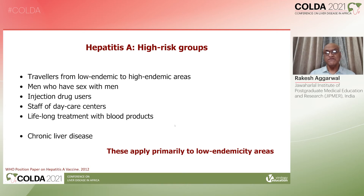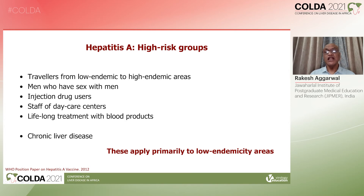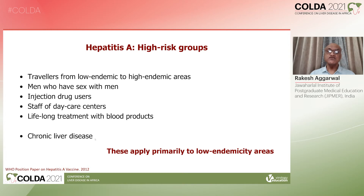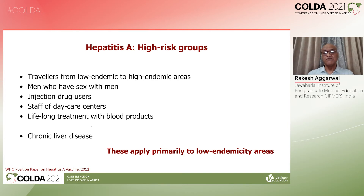Who should get this vaccine? High-risk groups include people who live in low-endemicity countries such as the USA, UK, or other parts of Europe when they travel to high-endemicity areas; men who have sex with men; people who inject drugs; or those on lifelong treatment with blood products such as hemophilia patients. Also, staff of daycare centers, because they deal with small children who may have greater risk of exposure to this fecal-orally transmitted virus. Persons with chronic liver disease or cirrhosis are at greater risk of liver failure and mortality if infection occurs.